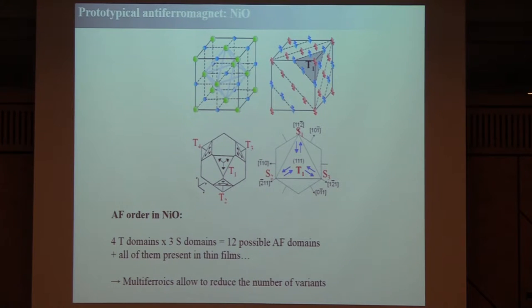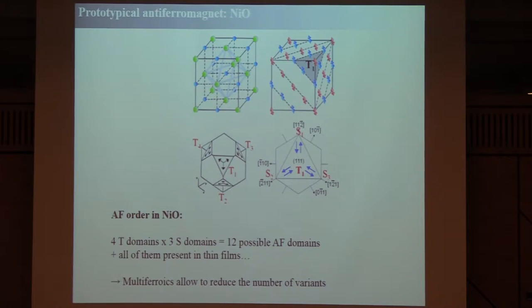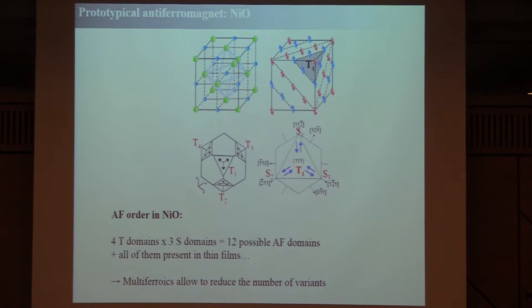A nice thing about using a multiferroic is that you can reduce the number of these variants, because you couple to another parameter. This other order parameter will force one of these antiferromagnetic domains. It won't force only one, but it will kill many of these possibilities and actually reduce them to three.